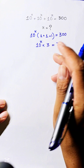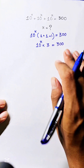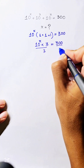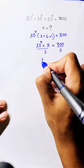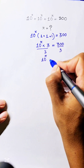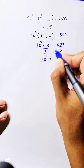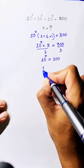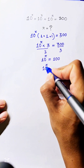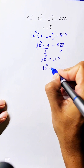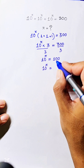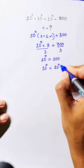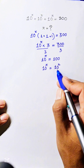We divide both sides of the equation by 3, so we get 10 power h equals 100. Now, 100 is equal to 10 squared, and since the base is the same, the exponents must match.